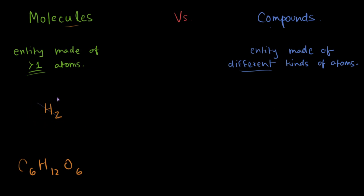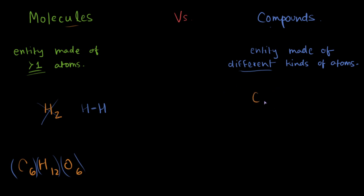So the hydrogen molecule H2 is not a compound, because it has the same kind of atom — hydrogen and hydrogen. But glucose is a compound because it has different kinds of atoms: carbon, hydrogen, and oxygen. That's why glucose can also be called a compound.